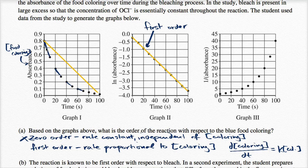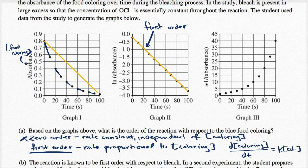You can even see the first order behavior directly: when the concentration of coloring is high, the rate is high with a steep slope, and as concentration becomes lower, the slope decreases proportionally. For a second order reaction, plotting one over absorbance versus time would yield a linear plot, but that is not the case here. Therefore, this is a first order reaction with respect to blue food coloring.